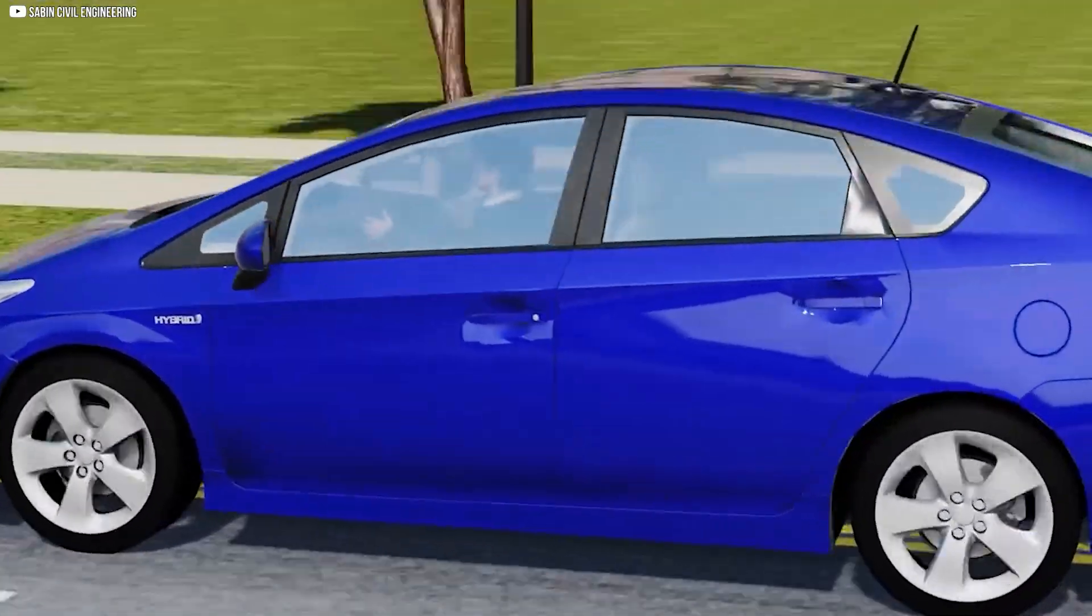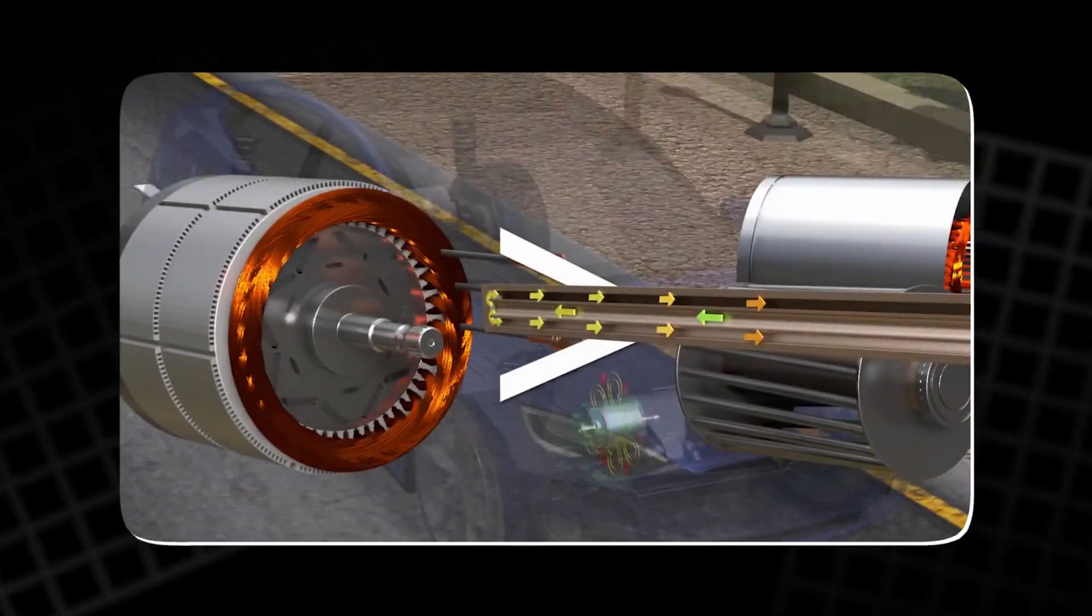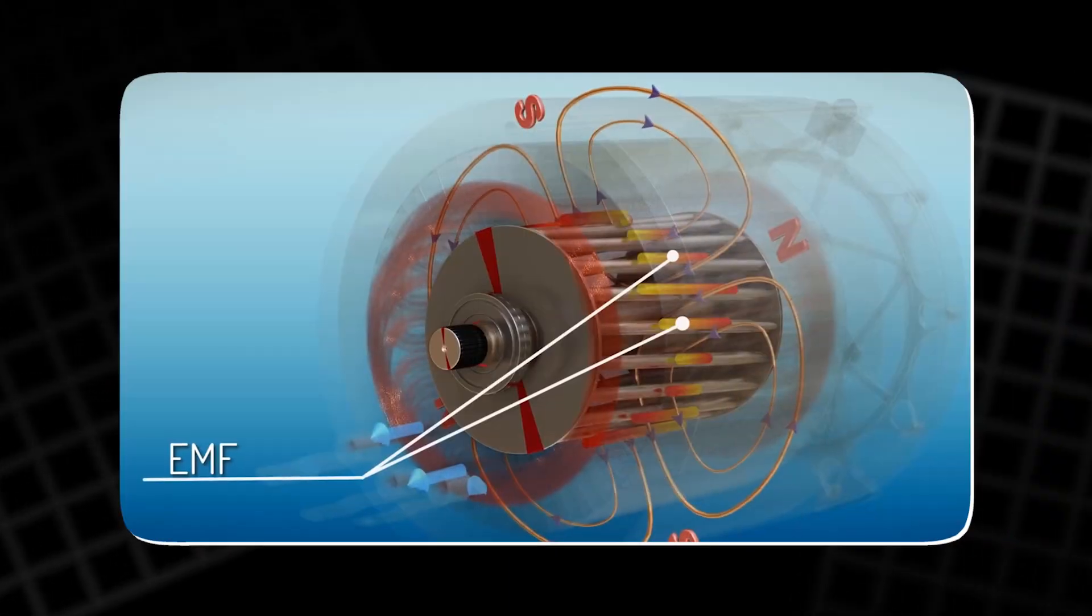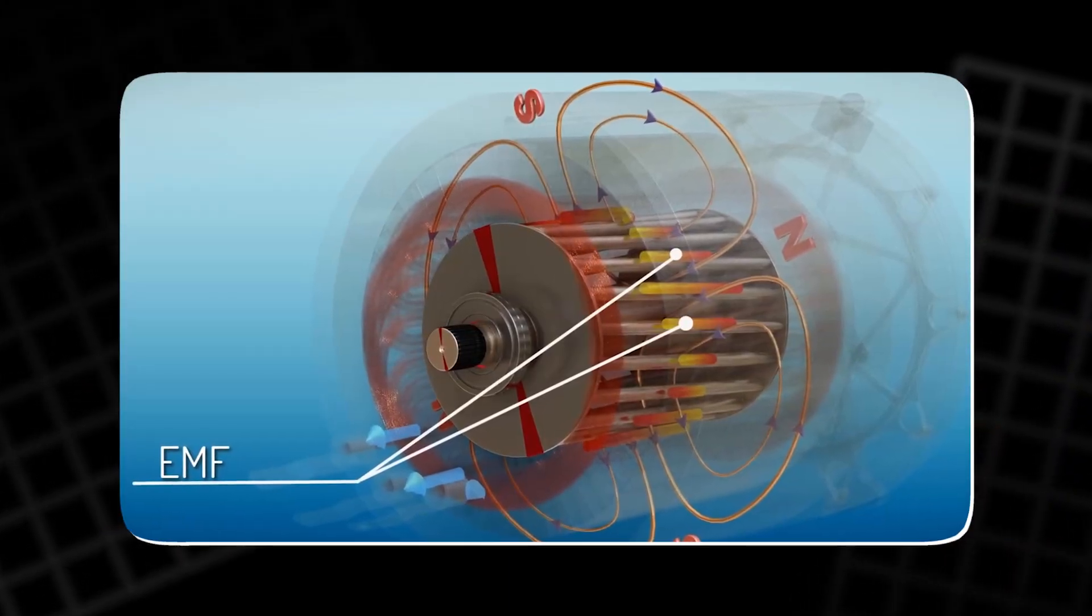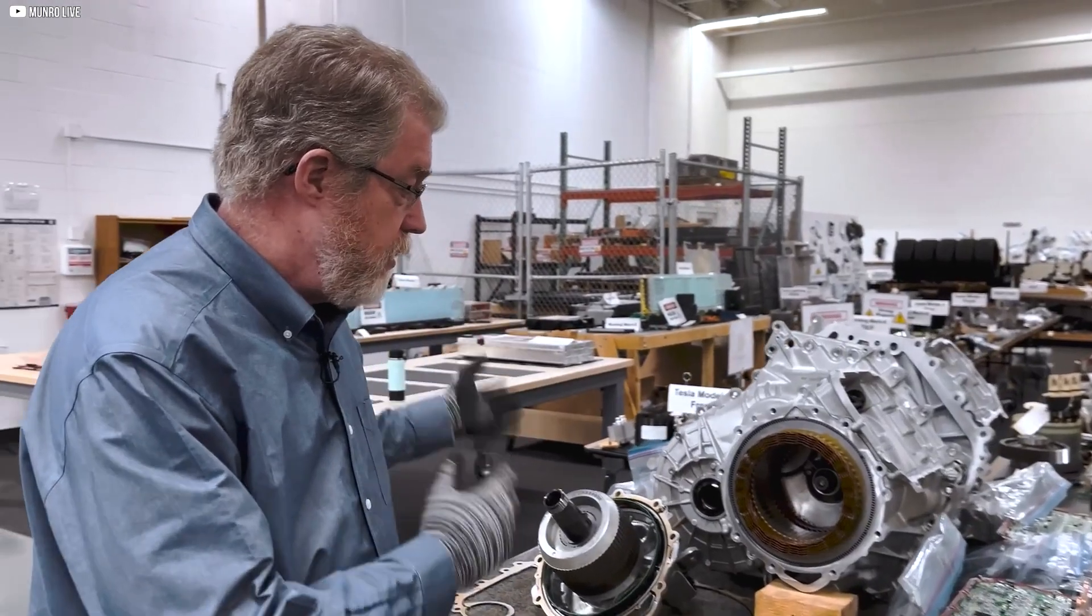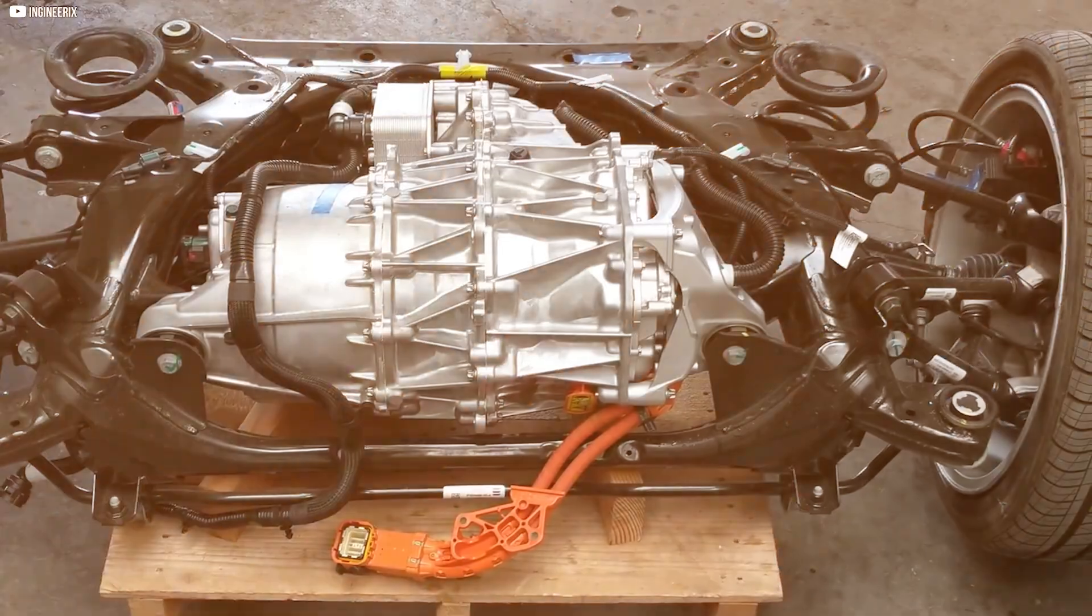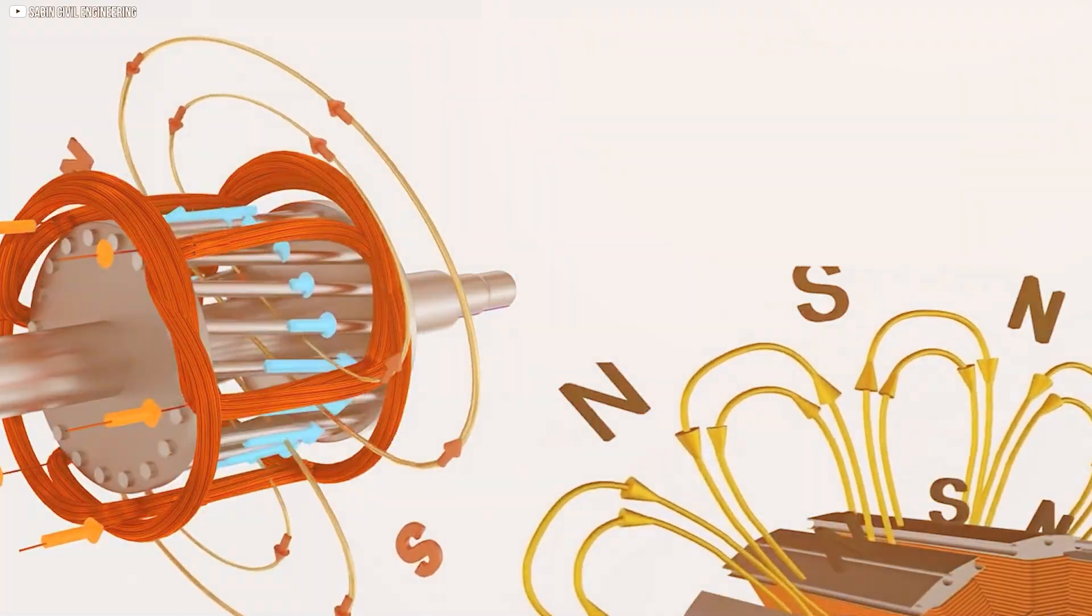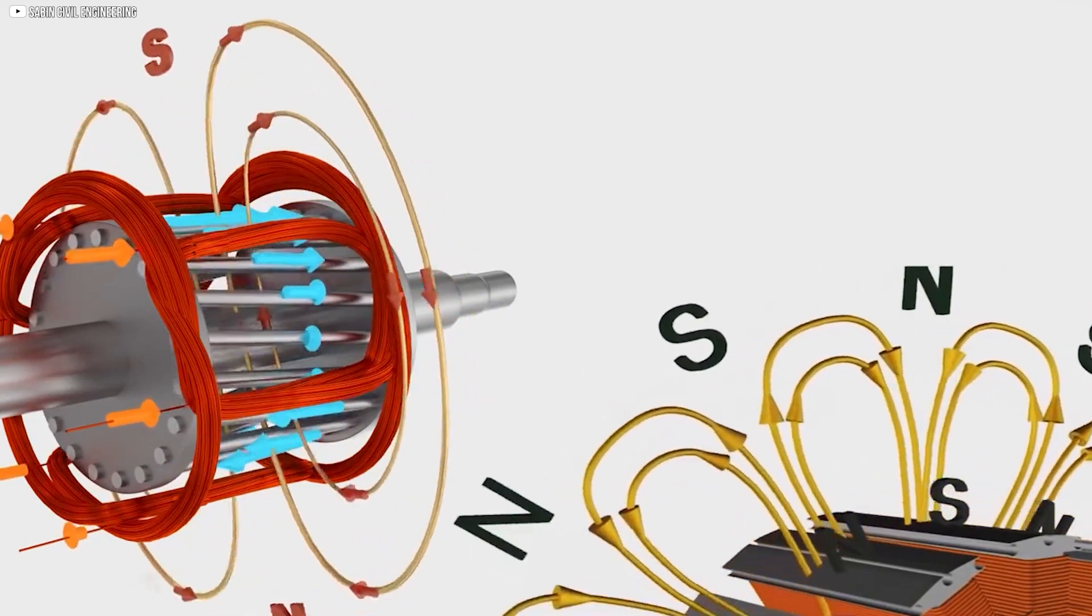As the vehicle speeds up, the controller changes the angle to weaken or even cancel out the magnetic field of the permanent magnets, reducing back EMF. At high speeds, the motor relies mostly on the reluctance torque. Because of this dynamic field control, the Model 3's motor can deliver smooth and powerful acceleration while maintaining high efficiency at highway speeds.